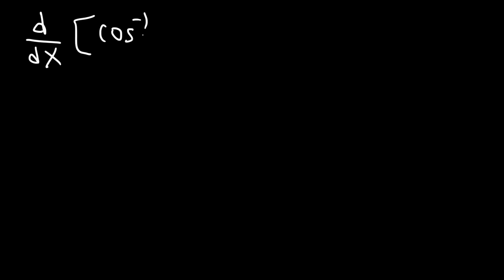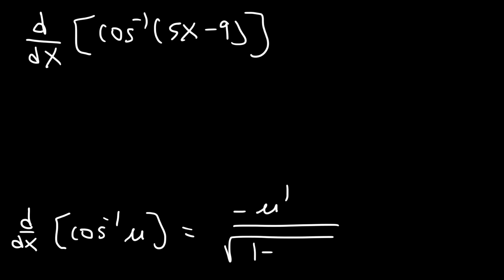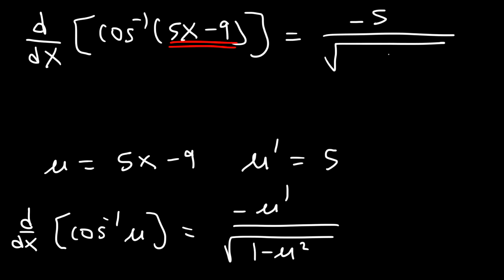Now let's try another example. What is the derivative of arc cosine of 5x minus 9? The derivative of arc cosine of u is very similar to the arc sine formula — it's negative u prime divided by the square root of 1 minus u squared. In this example, u is 5x minus 9, and the derivative of 5x minus 9 is simply 5. So the answer is negative 5 divided by the square root of 1 minus (5x minus 9) squared.